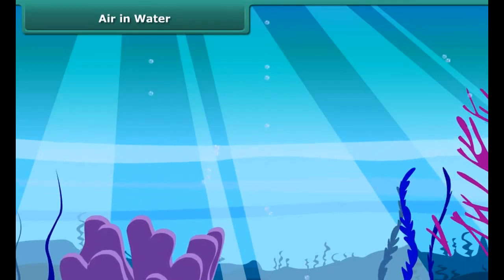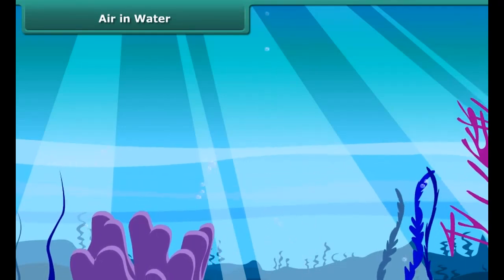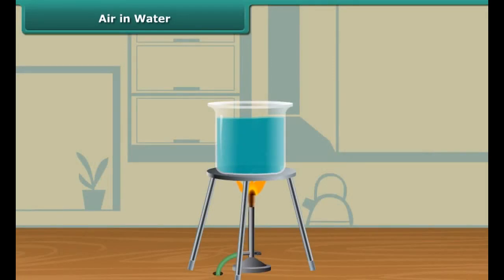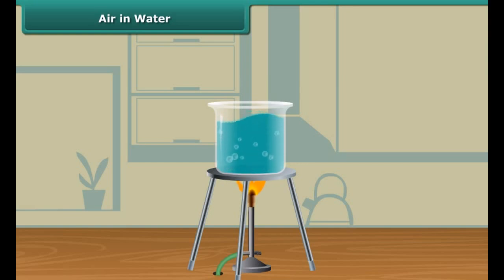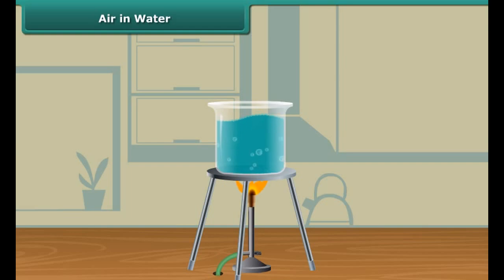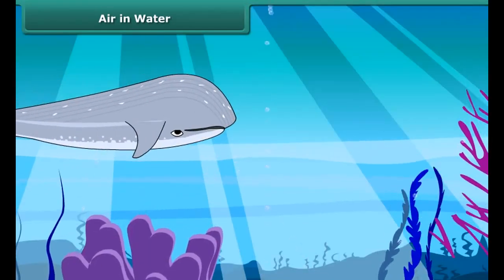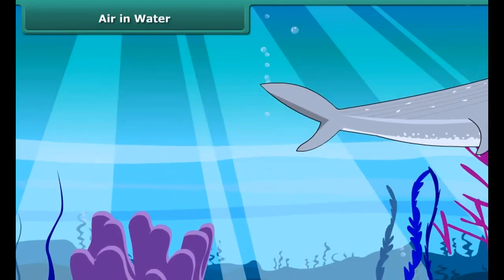Let us do an activity. Take some water in a beaker and heat it to boil. Can you see the bubbles coming out? These bubbles come from the water itself — air remains dissolved in water at normal temperature, so we can't see it. When water is heated, the dissolved air comes out as bubbles. The animals and plants in water use this dissolved oxygen for respiration.